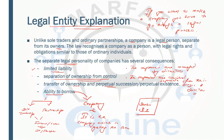So what makes a company different from sole tradership and partnership is: limited liability; separation of ownership from control where companies are managed by directors; owners and directors are considered separate from the company; transfer of ownership makes no difference to the company; the company can borrow in its own name; and any litigation goes against the company rather than individual owners or directors.